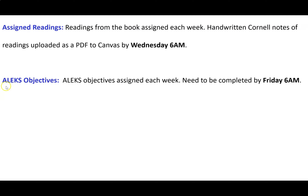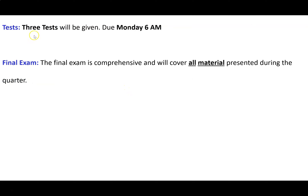In addition to assigned readings and quizzes every week, you'll be assigned a series of ALEKS objectives — in summer quarter that's around 15 objectives per week because we have a pretty short quarter. Those need to be completed by Friday at 6 AM. So: notes are due Wednesdays, objectives are due Fridays, and quizzes or tests are due by Monday. There are three tests throughout the quarter, due on Mondays just like quizzes — when we have a test we don't have a quiz. There's also a final exam covering the entire quarter's content.